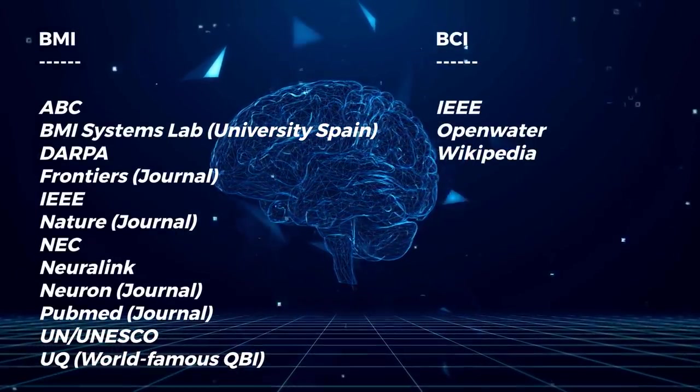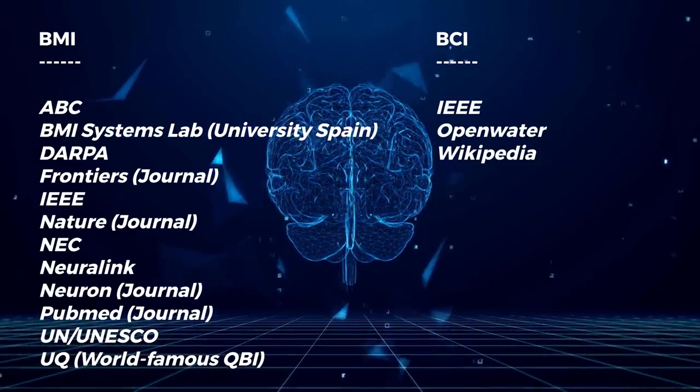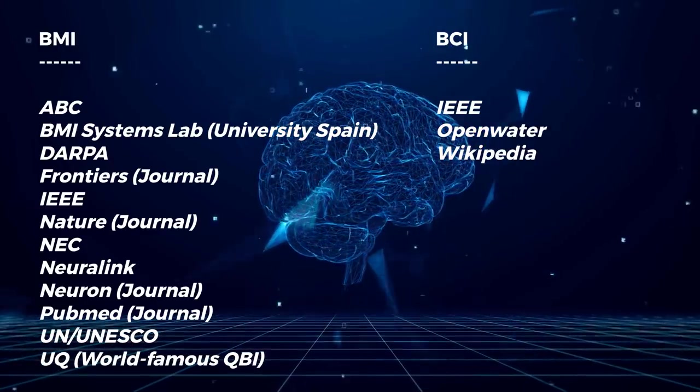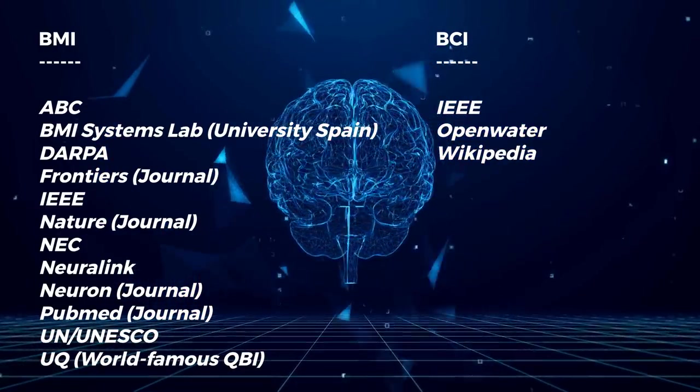Okay. BMIs — brain machine interfaces. You may have also heard these called BCIs, brain computer interfaces. At the moment, we haven't standardized the terminology, so you might even see BMI slash BCI. I'm using BMI today — a lot of my partnerships or memberships use this. Have a look at places like IEEE, some of the big journals. Elon Musk's Neuralink is calling it a BMI. The University of Queensland with their massive Brain Institute also uses this BMI terminology.